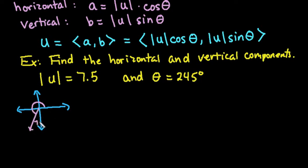Okay, so 7.5 is basically my hypotenuse or the length of the vector, and then I'm trying to find what are my x and y coordinates. Okay, so my x coordinate is my horizontal, my y coordinate is my vertical. So essentially that's what we're trying to find here.